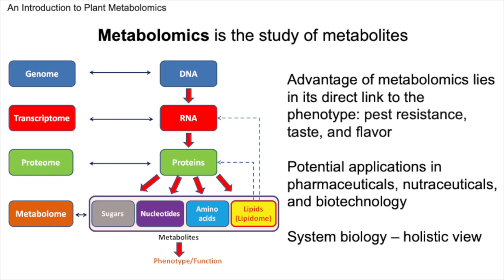Metabolomics is the scientific study focused on the comprehensive analysis of metabolites in a biological organism. The advantage of metabolomics lies in its direct link to the phenotype. By analyzing the complete set of metabolites, or the metabolome, it offers a snapshot of the organism's current biochemical state. This is crucial because the phenotype, including traits like pest resistance, taste, and flavor, is the direct manifestation of underlying biochemical processes.